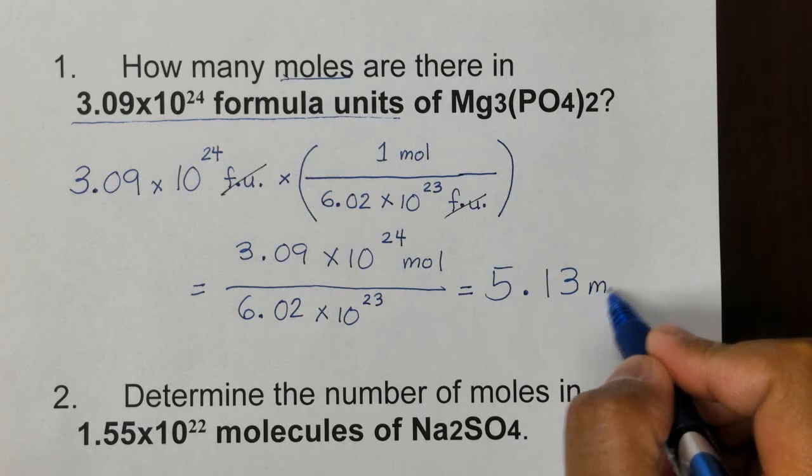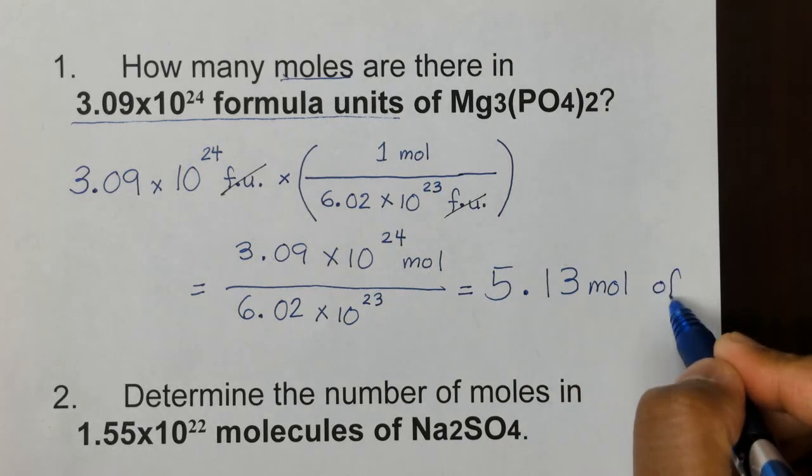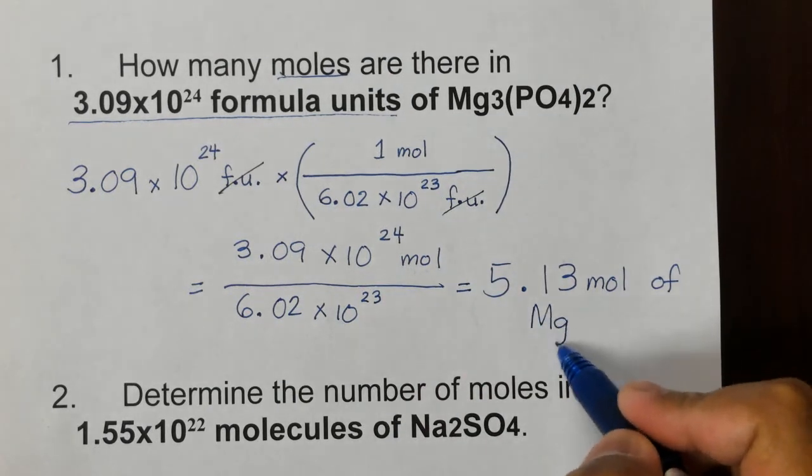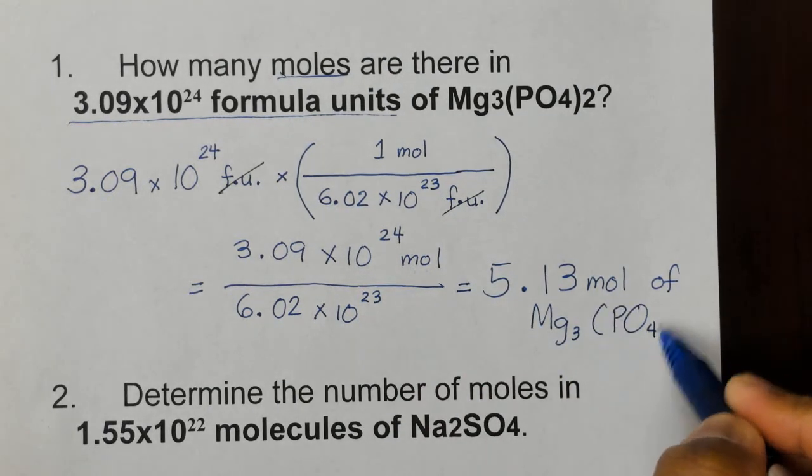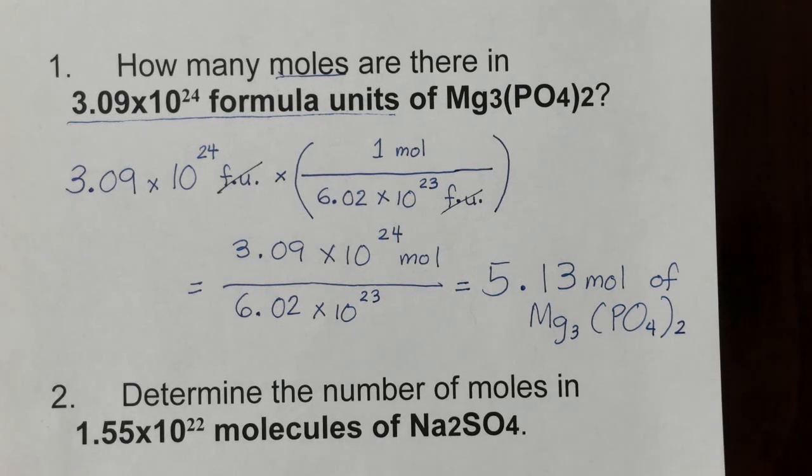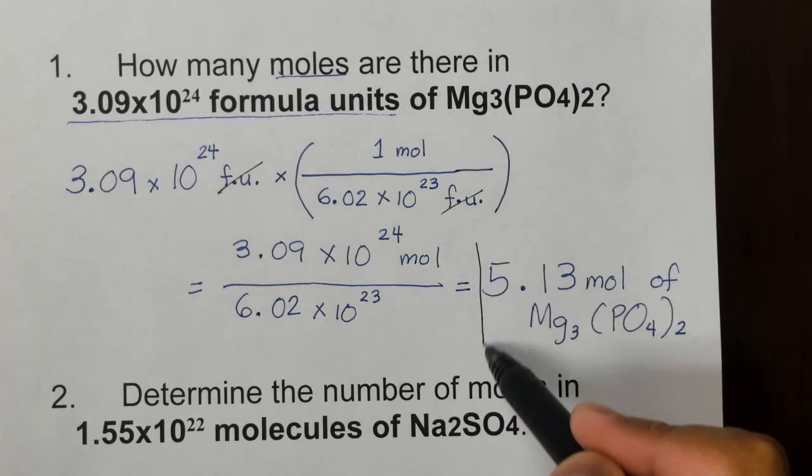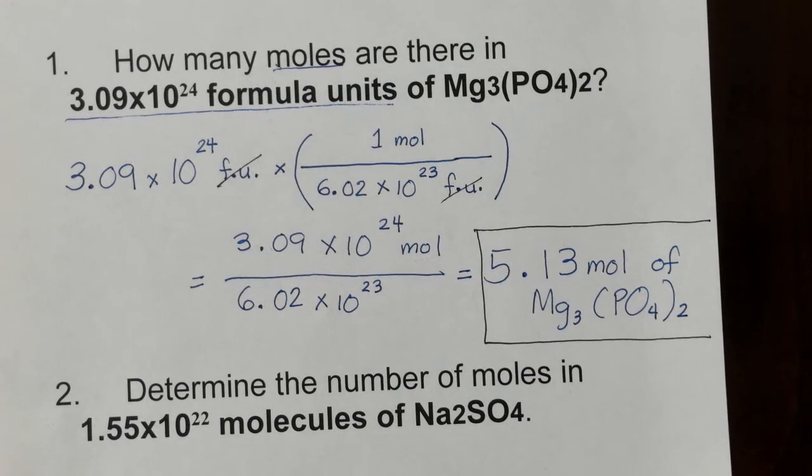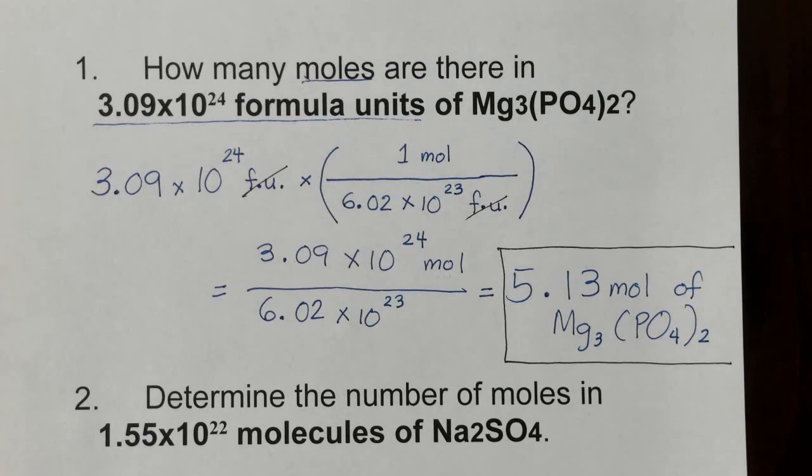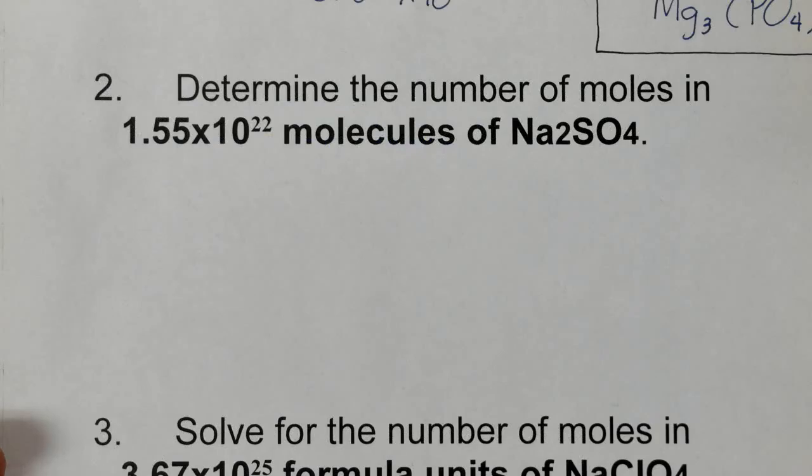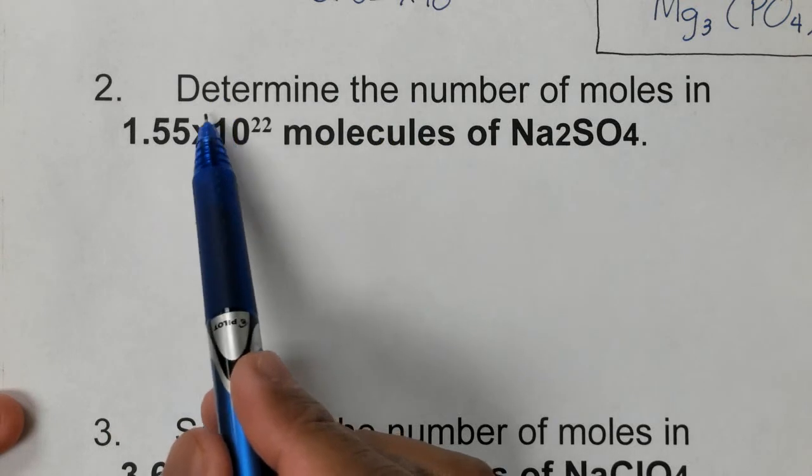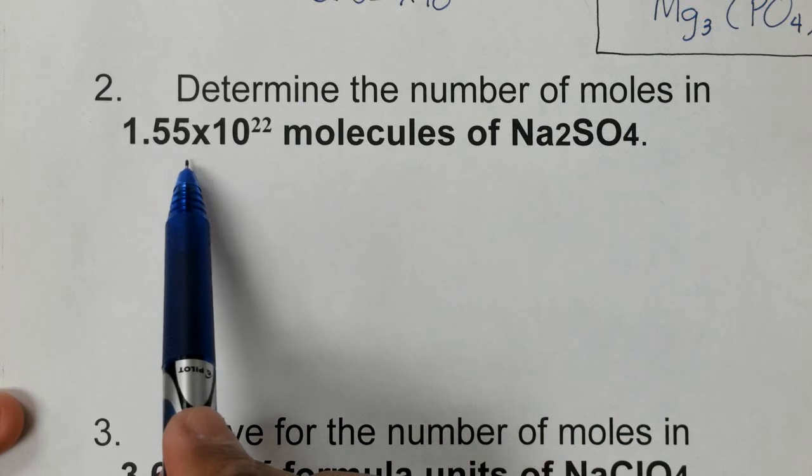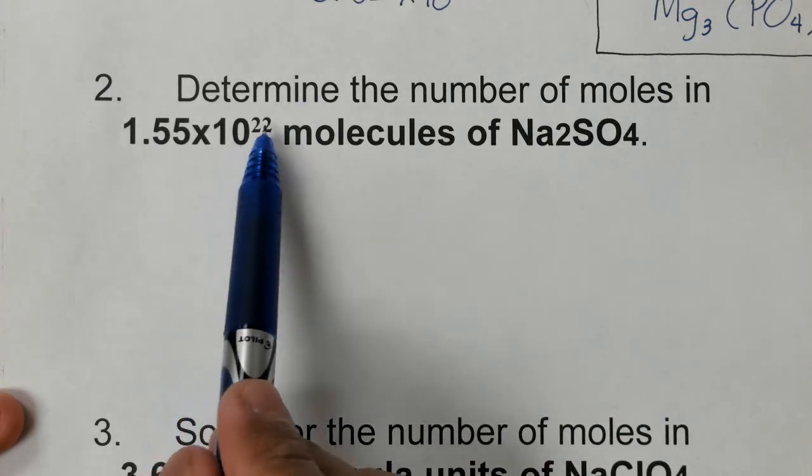And after that we will put the unit, so the unit is mole based from here. So that's mole, and then you put all your substance here. So your substance is Mg3(PO4)2, so just copy the way it looks like in your problem. Then we're going to box the final answer to emphasize that that's our answer for number one.